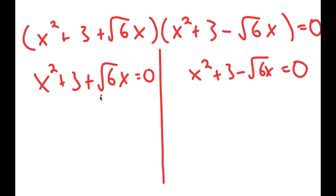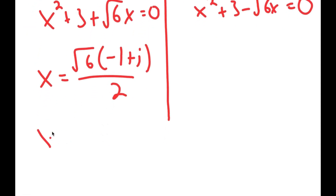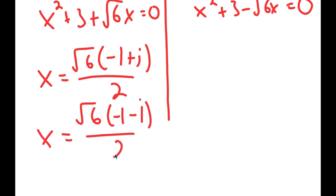Both of these are quadratic equations, so you can use the quadratic formula to solve them. I'm not going to do that in the video, but you can try it yourself. Using the quadratic formula, you should get x equals the square root of 6 times negative 1 plus i, over 2, and x equals the square root of 6 times negative 1 minus i, over 2.